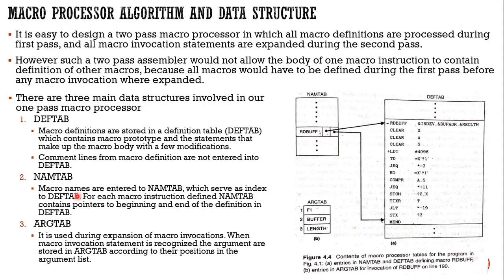The next table is NAMTAB, the macro name table. It contains the macro name — here RDBUFF — along with two pointers: the first pointing to the start of the macro body in DEFTAB, and the second indicating the end of the macro code. NAMTAB serves as an index to DEFTAB for each macro instruction defined.